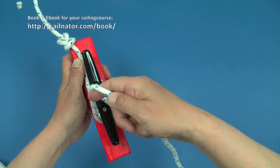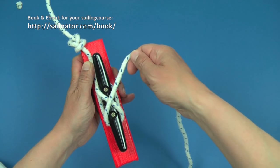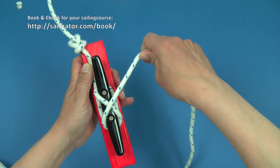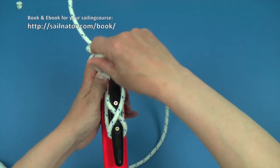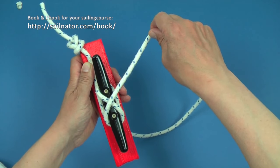I cross the cleat and the line to the other direction and here comes the trick. Instead of pulling through the line under the cleat, I tie a loop which is called a bitter.